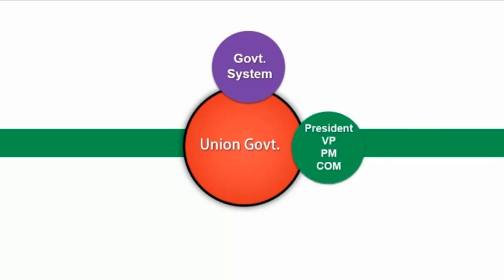Then we understand the president, vice president, prime minister, and council of ministers. This is a very important part. We understand the election of the president, the election of the vice president, the appointment of the prime minister and council of ministers, and their functions. The system of government will take about one hour, and president, vice president, prime minister, and council of ministers about two hours.